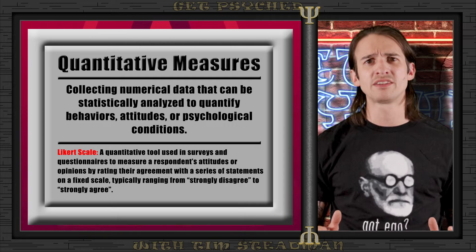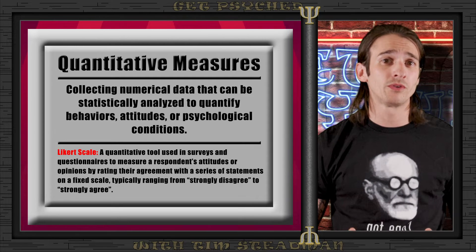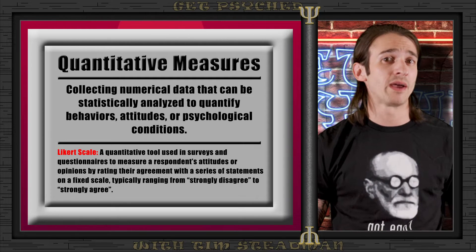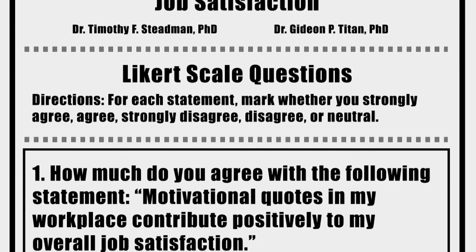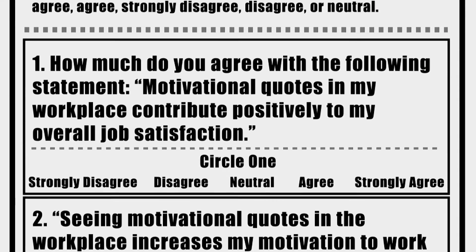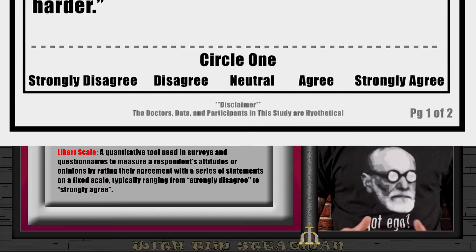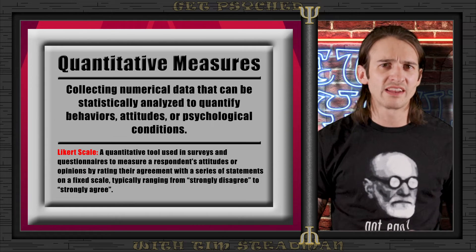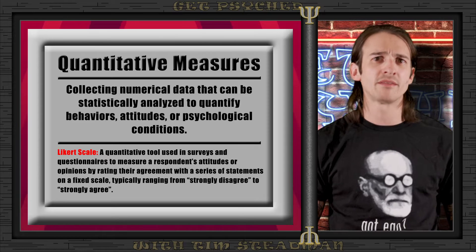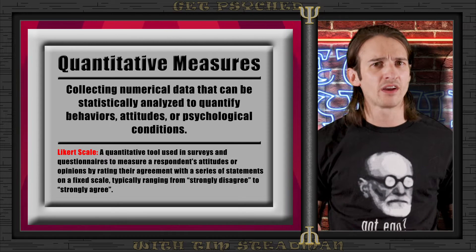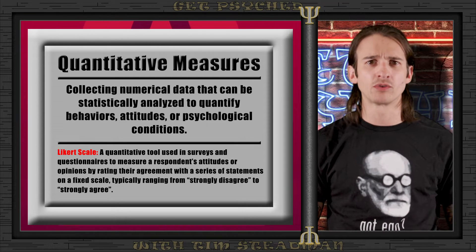On the other hand, quantitative measures involve numerical data. These help us quantify behaviors and attitudes so we can apply statistical analysis and look for patterns. A common tool is the Likert scale — questionnaires that give you a statement and ask whether you strongly agree or strongly disagree. Likert scales allow researchers to convert subjective information into measurable data, which is very important when drawing psychological conclusions.